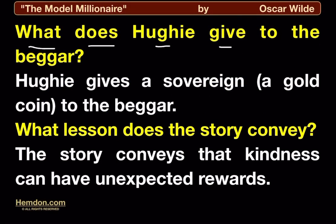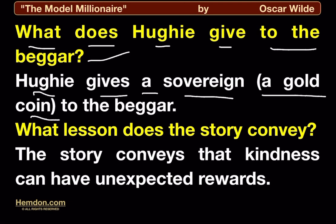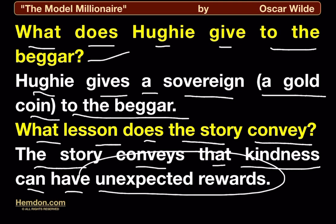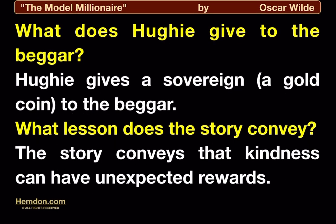What does Hugh give to the beggar? Hugh gives a sovereign, a gold coin, to the beggar. What lesson does the story convey? The story conveys that kindness can have unexpected rewards.